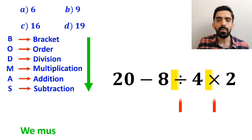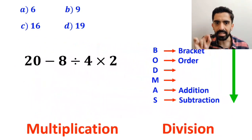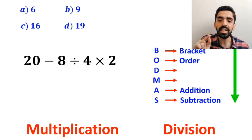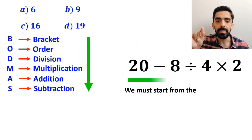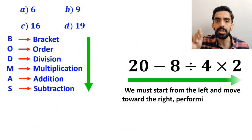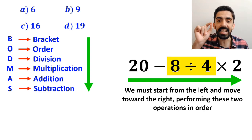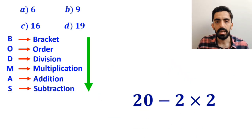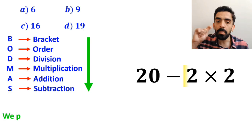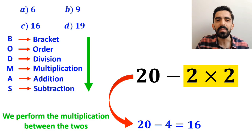Then we must perform the division and multiplication. It's really important to understand that in the BODMAS rule, multiplication and division have the same level of priority. In this situation, we must start from the left and move toward the right, performing these two operations in order. So first we do the division between 8 and 4, and this expression simplifies to 20 minus 2, then times 2. In the final step, we perform the multiplication between the twos, which simplifies the expression to 20 minus 4, and the value of this expression will be 16.